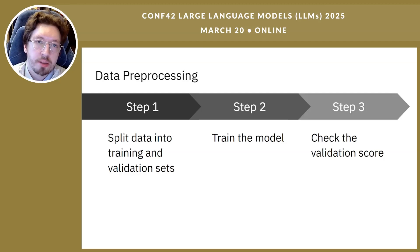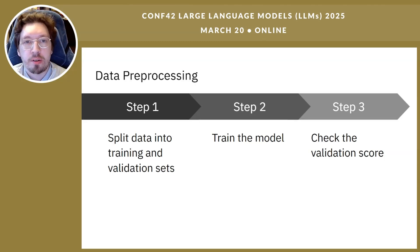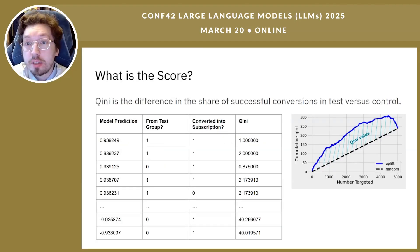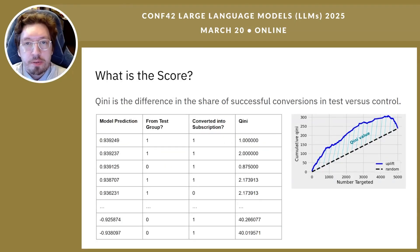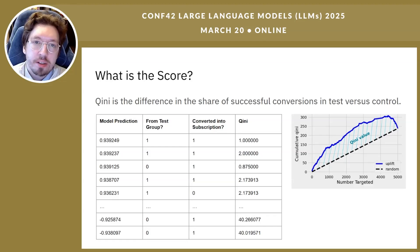We measure the score on both sets and ensure there is neither overfitting nor underfitting. That's it — our model is ready. The Gini score we use is the difference in share of successful conversions in test vs. control, but for the entire sample. The difference is always the same.